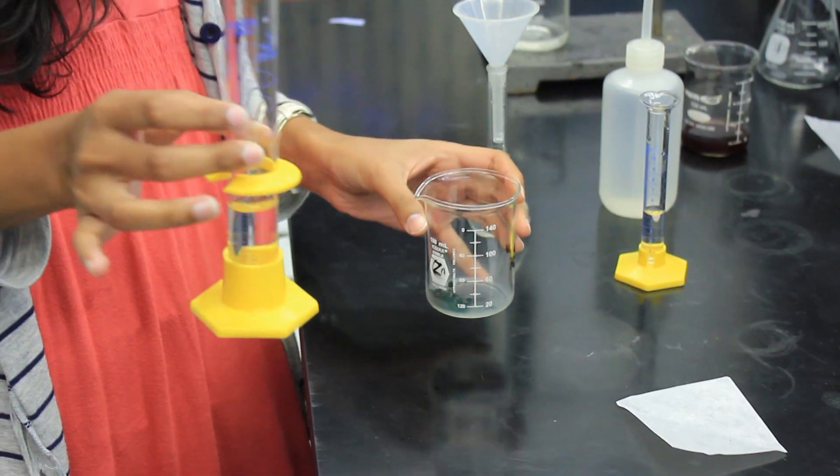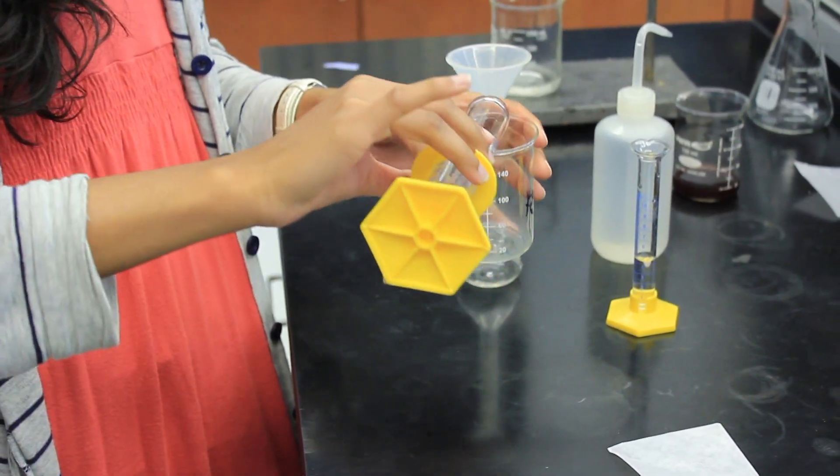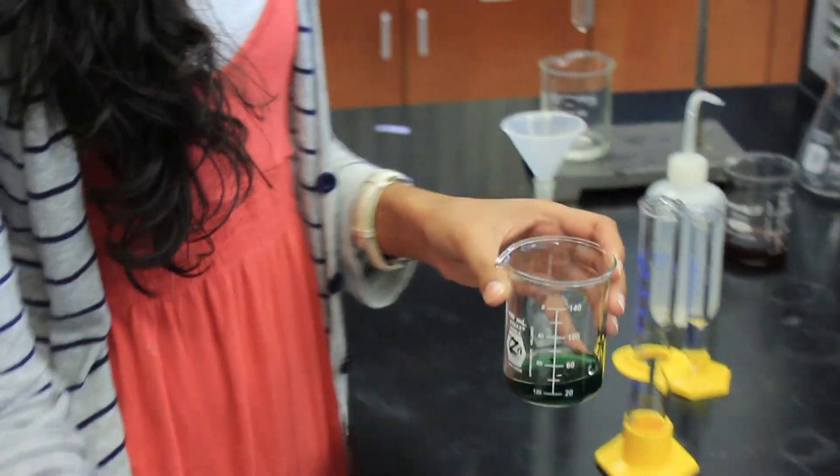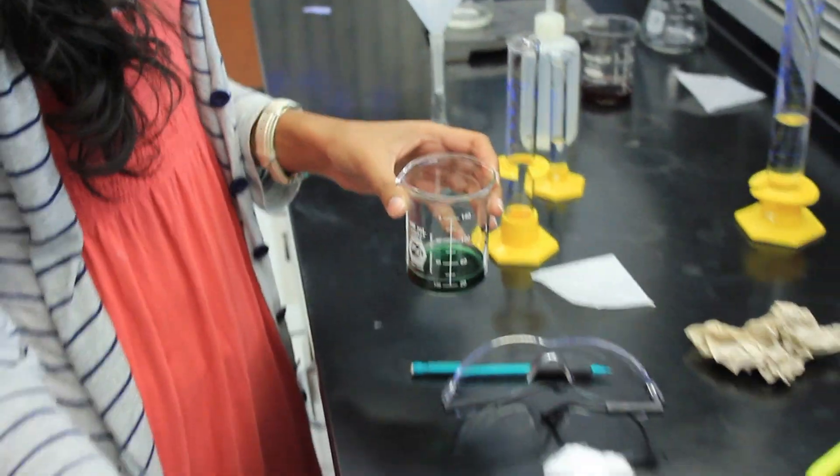Now we're going to add 20 milliliters of DI water to the green crystals. Then we're going to add 0.4 grams of zinc into the solution.